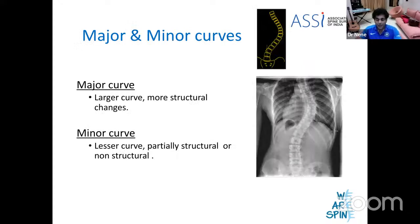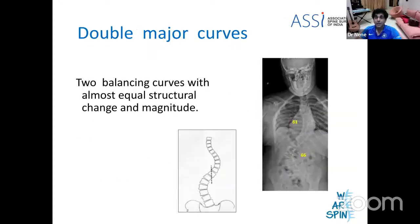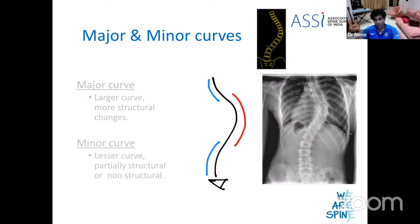What about major and minor curves? Major means the bigger one and minor means the smaller one. A curve that's larger amongst the two is called a major curve and the curve that's smaller is the minor curve. If there are two equal curves it would be a double major curve — the terminology double major means there's no minor because both are equal. For example, an X-ray showing 61 and 66 degrees — you would call both major curves, making it a double major.